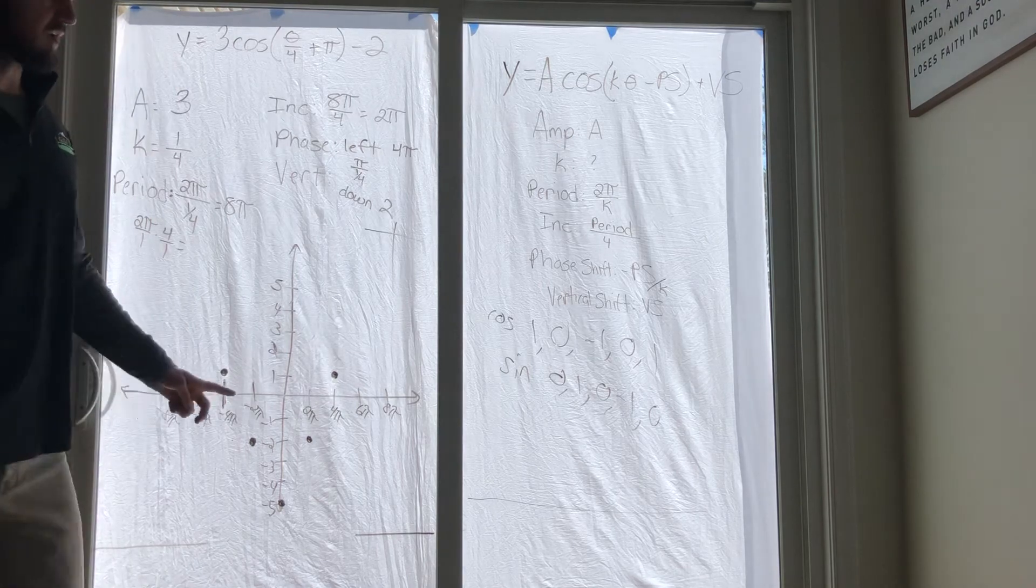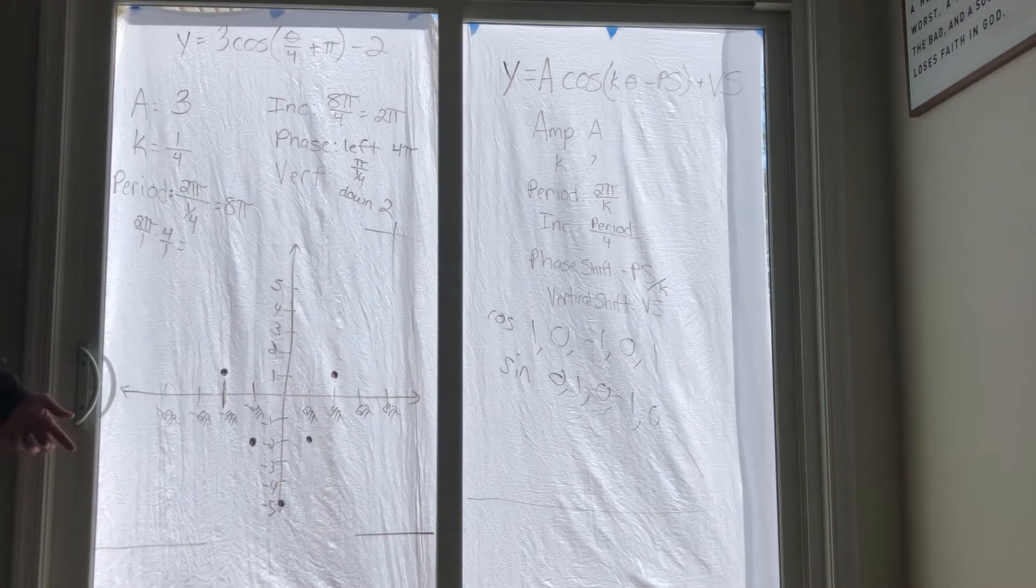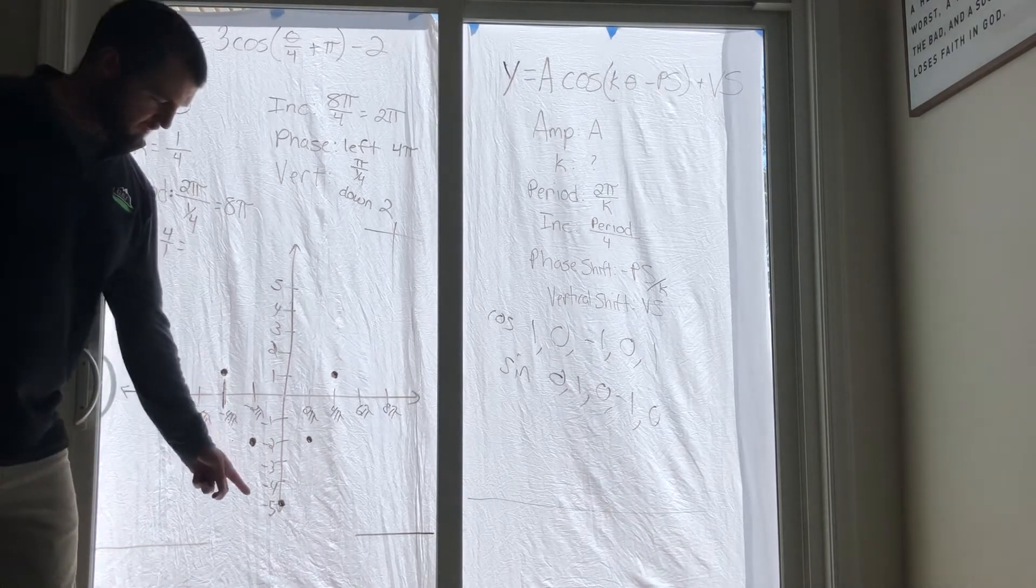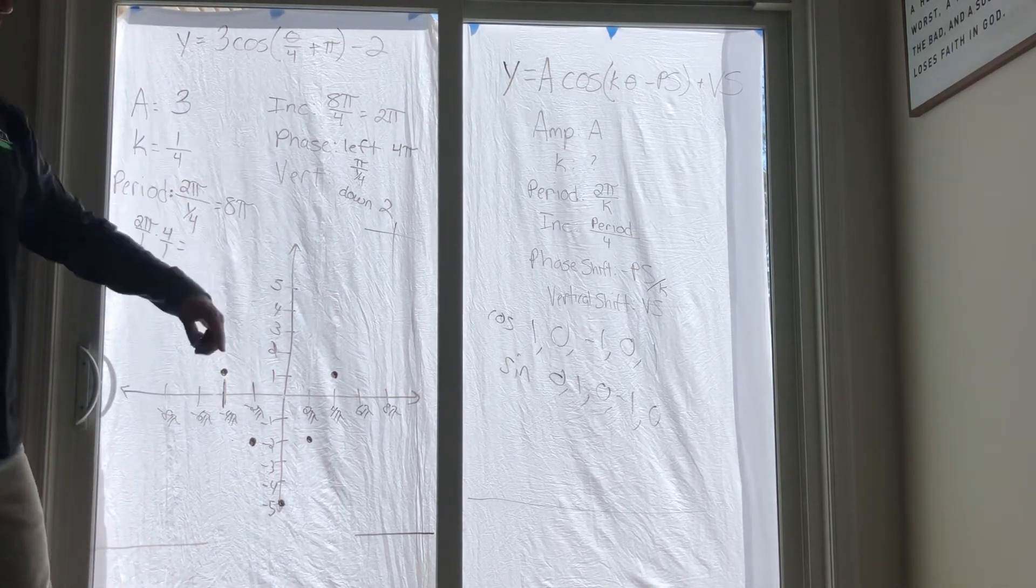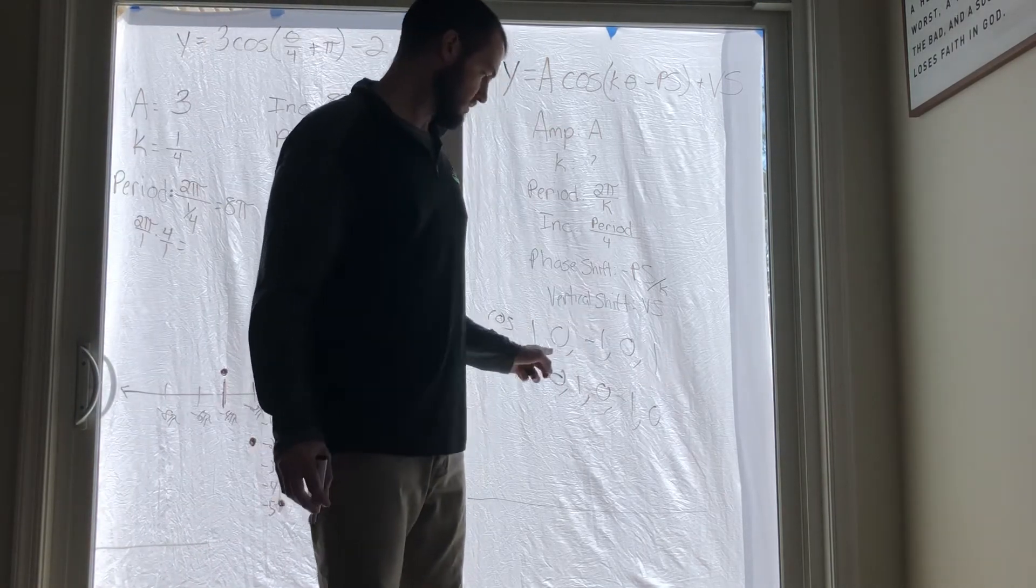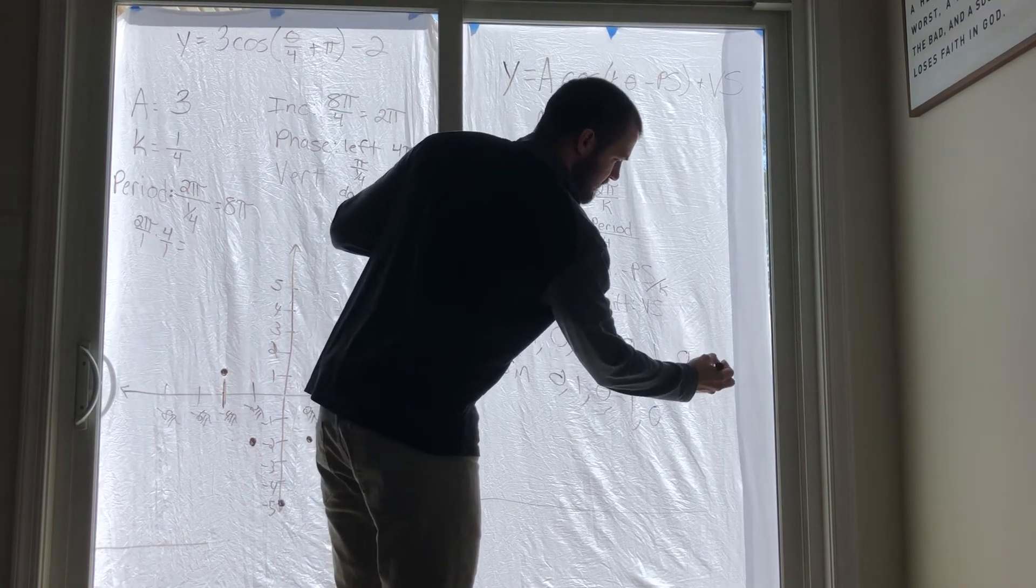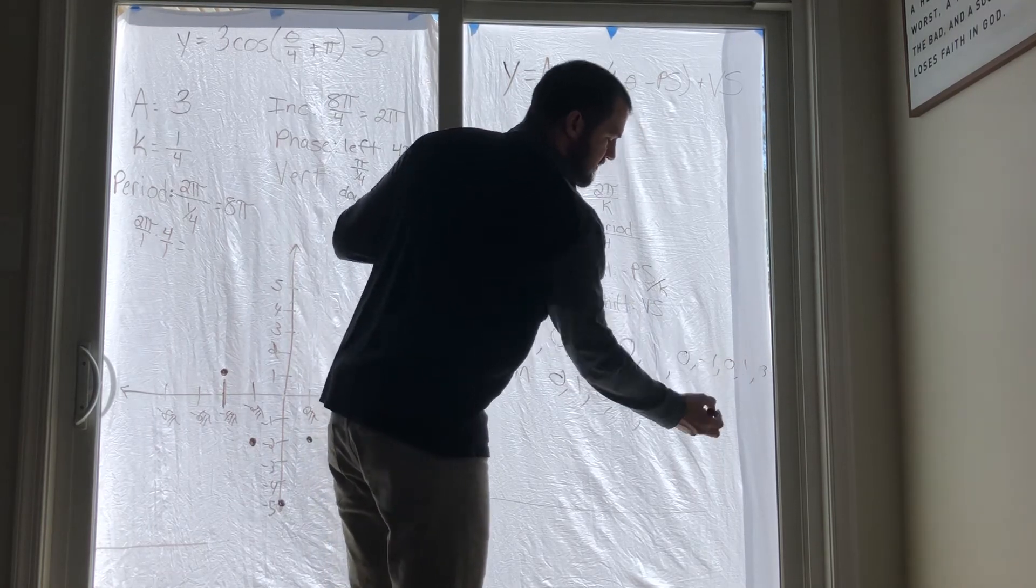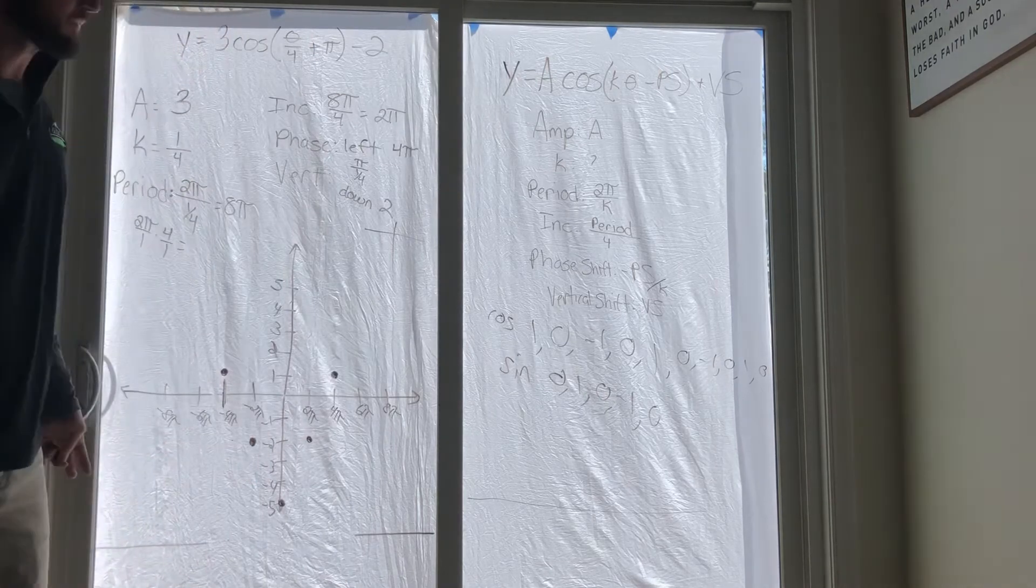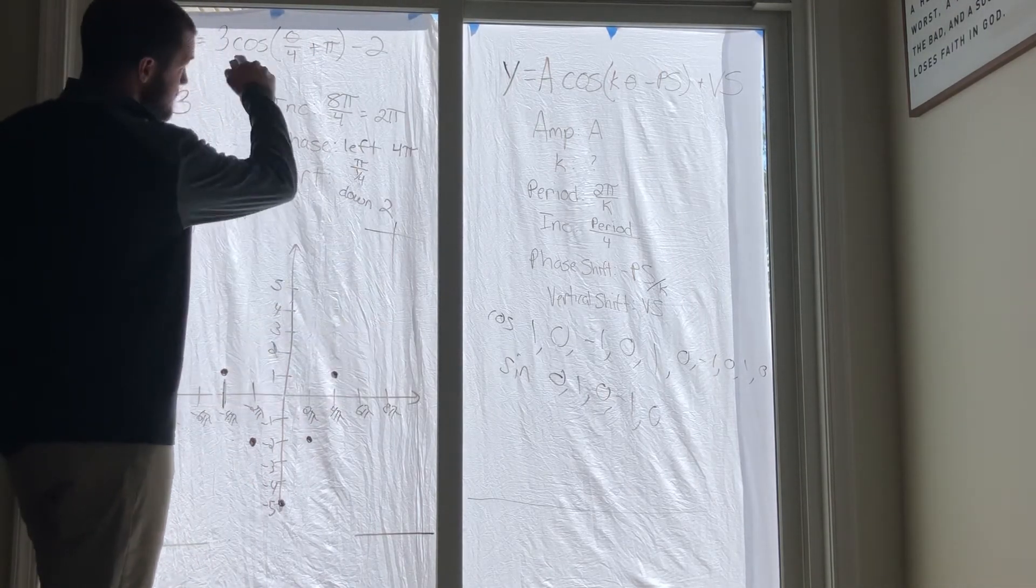What would the next number in this pattern be? It would be zero, right. If you want to extend these numbers out, go 0, negative 1, 0, 1, 0 - you can do that, it's not going to make a big deal. So our next number is 0 times 3 minus 2 is negative 2.